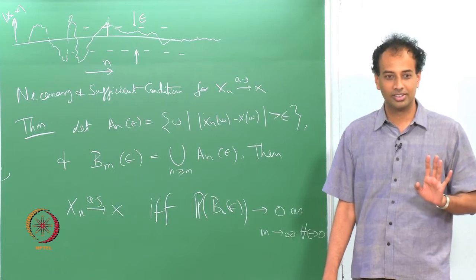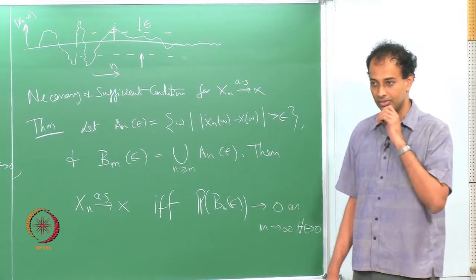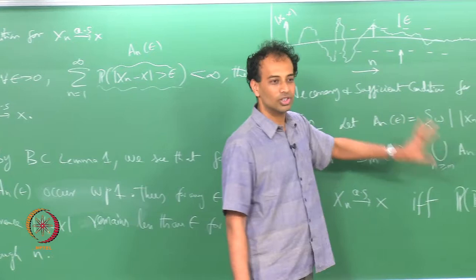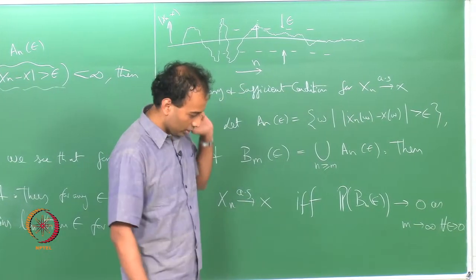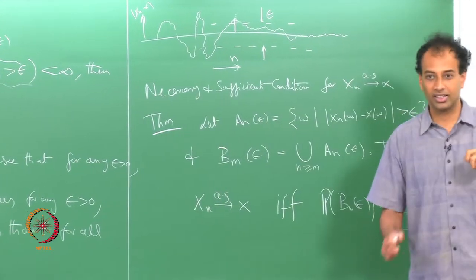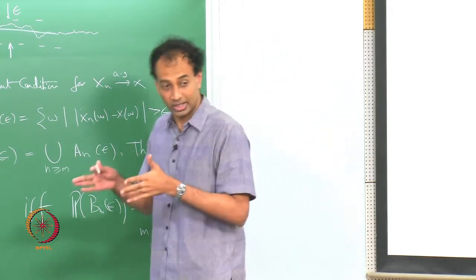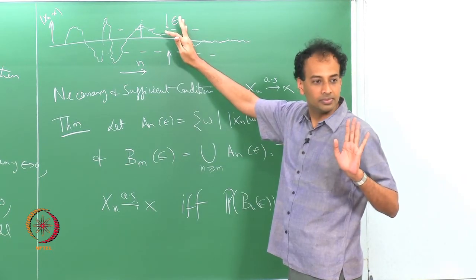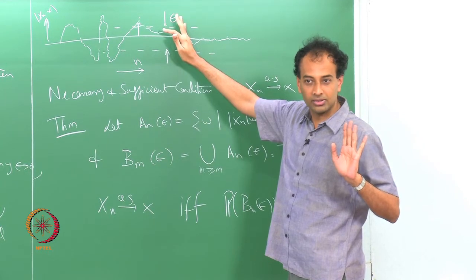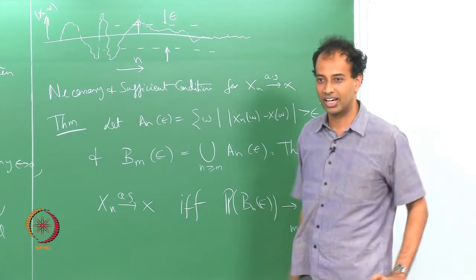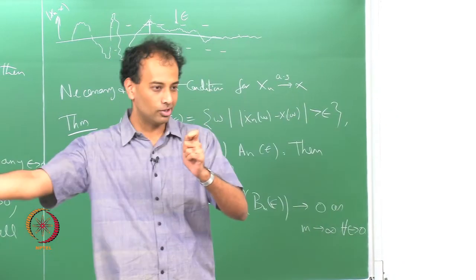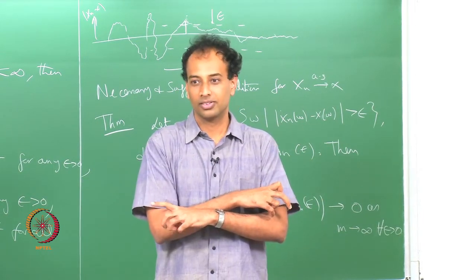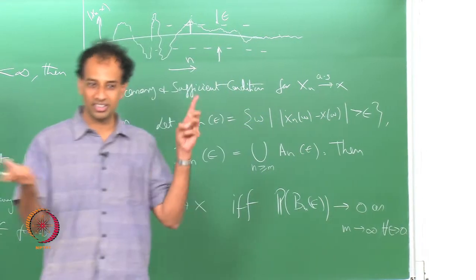What this theorem says is: x_n tends to x almost surely if and only if, beyond some m, no epsilon excursions ever occur. If you find some m — which can be very large — beyond which no epsilon excursions occur, then you have almost sure convergence, and vice versa. It is a necessary and sufficient condition, not just a sufficient condition.